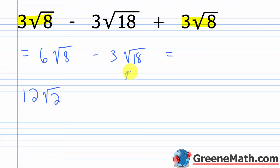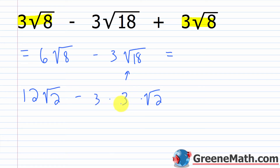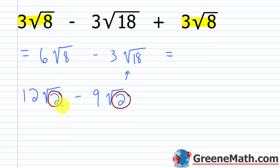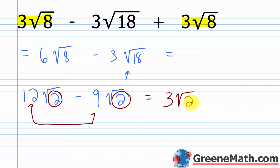For the 3 times the square root of 18 term: the square root of 18 is the square root of 9 times the square root of 2. The square root of 9 is 3, so 3 times 3 is 9, giving minus 9 times the square root of 2. Now we have the same radicand — a 2 — and the same index in each term. So 12 minus 9 gives 3 times the square root of 2, and that's the final answer.